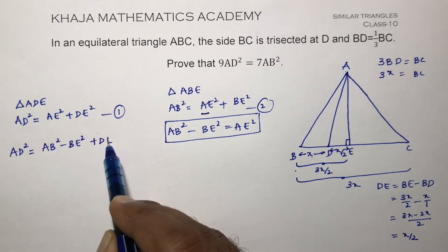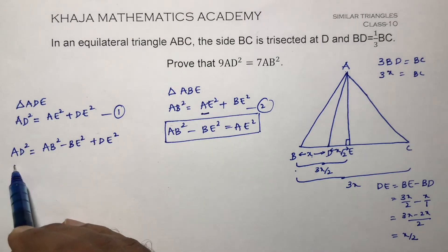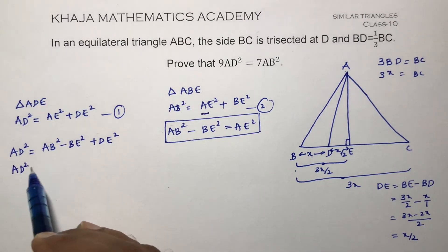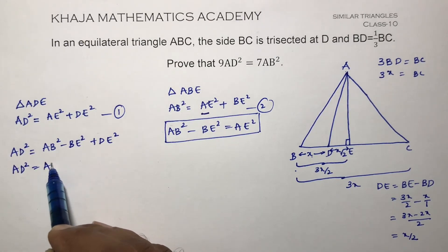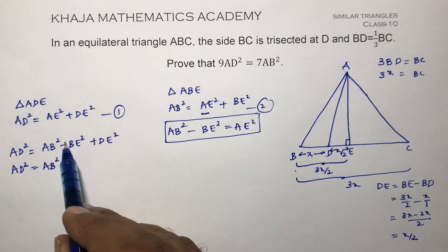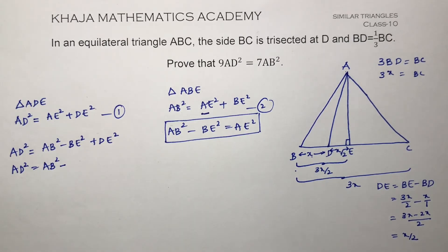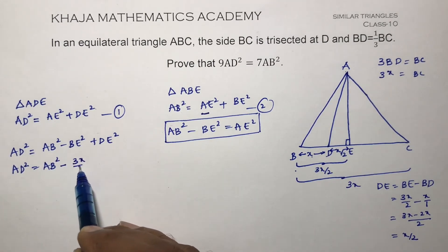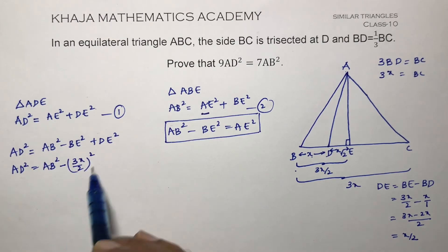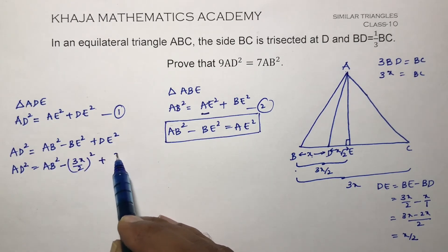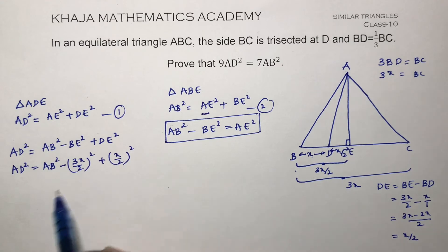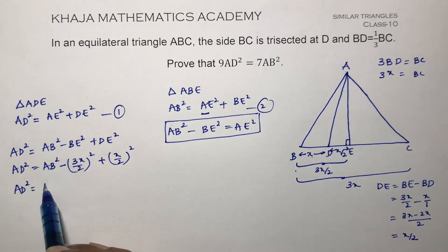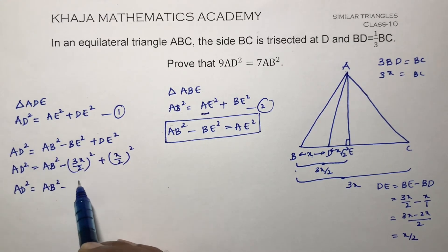We need AD², so don't expand the AB² part. By looking at the diagram, substitute the values: BE is 3X/2 and DE is X/2. So AD² equals AB² minus (3X/2)² plus (X/2)², which gives AB² minus 9X²/4 plus X²/4.